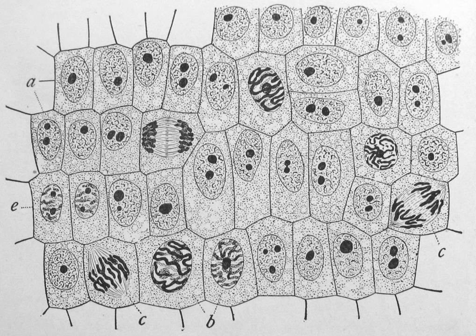The cytoskeleton acts to organize and maintain the cell's shape, anchors organelles in place, helps during endocytosis — the uptake of external materials by a cell — and cytokinesis, the separation of daughter cells after cell division, and moves parts of the cell in processes of growth and mobility. The eukaryotic cytoskeleton is composed of microfilaments, intermediate filaments, and microtubules. The prokaryotic cytoskeleton is less well studied but is involved in the maintenance of cell shape, polarity, and cytokinesis.